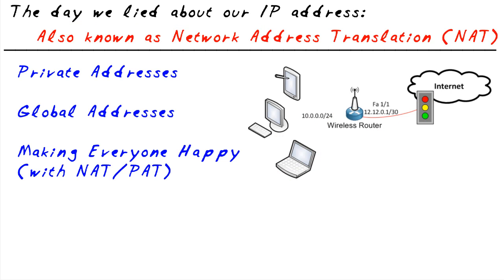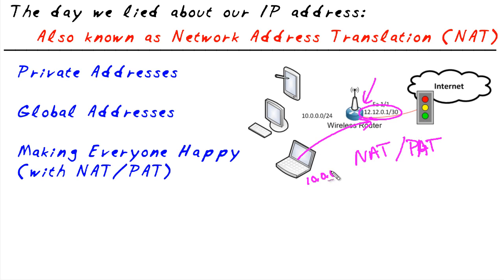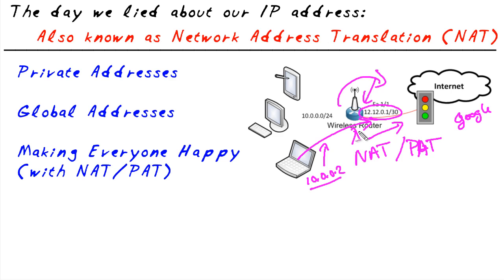Using the magic of network address translation and its cousin port address translation, this router can take Bob's source address — maybe it's 10.0.0.2 — and swap it out as the packet goes out to the internet. So if he's going out to google.com, the source address is 10.0.0.2, but once it goes through the router and NAT is applied, the packet shows as going from 12.12.0.1 to Google. The router maintains memory of what it mapped. When the reply comes back from Google to 12.12.0.1, the router recognizes it came from Bob, untranslates it, and forwards it back to 10.0.0.2.